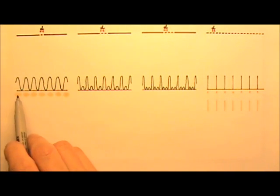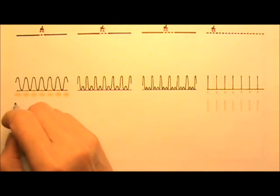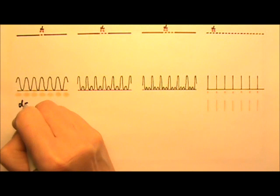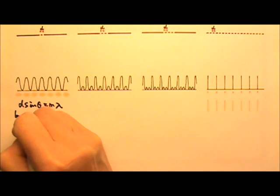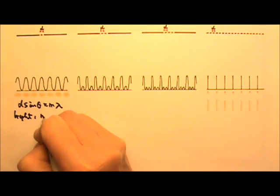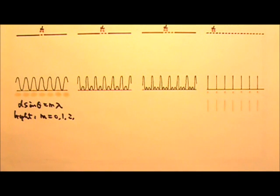For double slits, we get bright fringes that are equal distance apart. And the equation we have is D sine theta equals M lambda. And all the bright fringes happen where M is 0, 1, 2, 3, that kind of number.